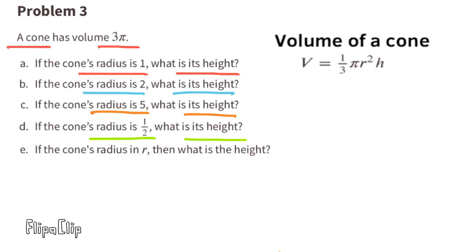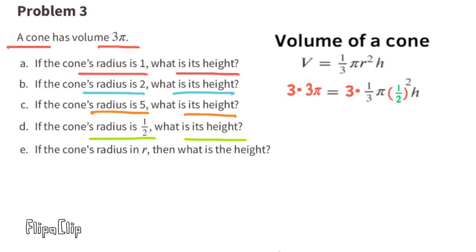Part d: If the cone's radius is 1/2, what is its height? Substitute r with 1/2. The equation reads 3 pi equals 1/3 pi times 1/2 squared times height. Multiply both sides by 3: 9 pi equals pi times 1/2 squared times height. 1/2 squared is 1/2 times 1/2, or 1/4.